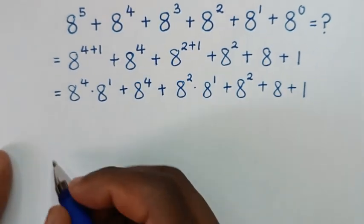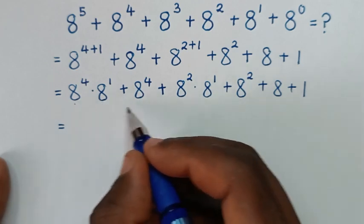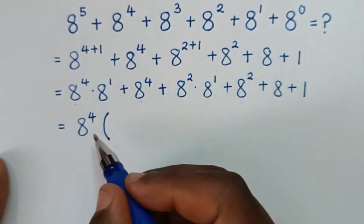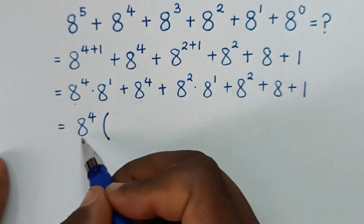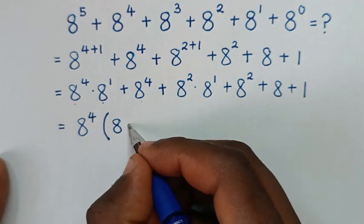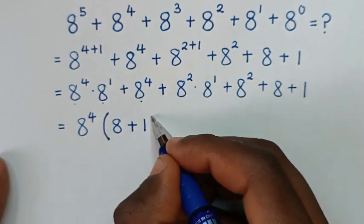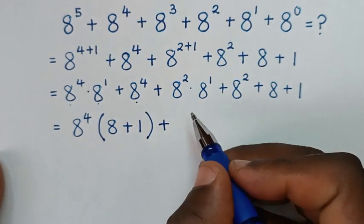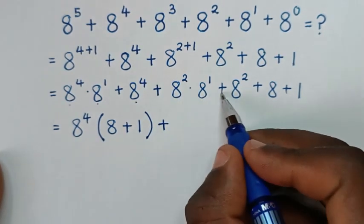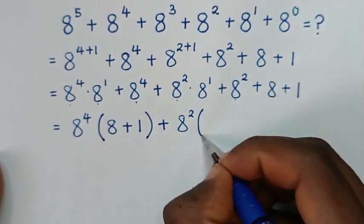In the next step, 8 into here and here — 8 power 4 is common, so we'll take 8 power 4 out of bracket. 8 power 4 times 8 power 1 divided by 8 power 4 is 8 power 1 which is 8, plus 8 power 4 divided by 8 power 4 which is 1, bracket.